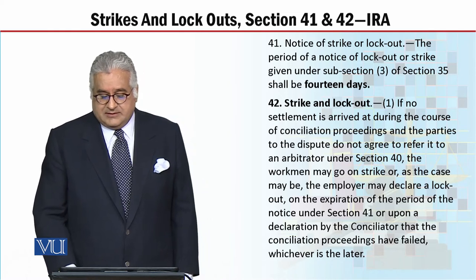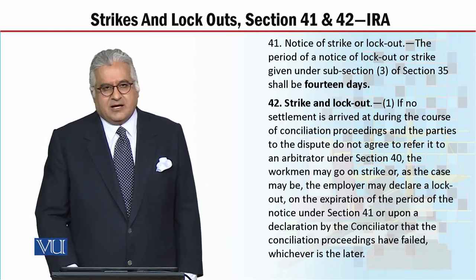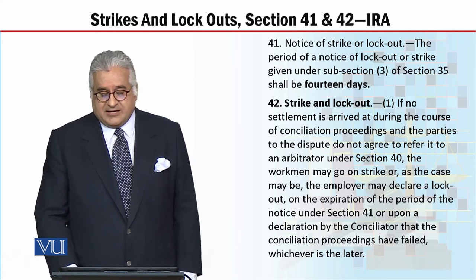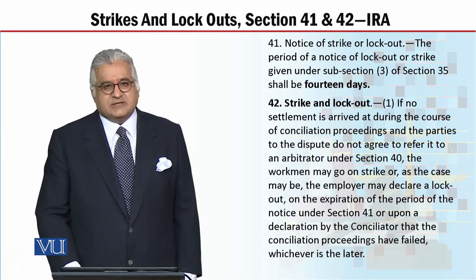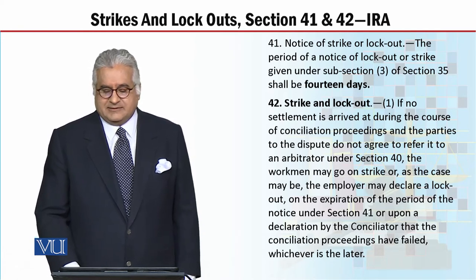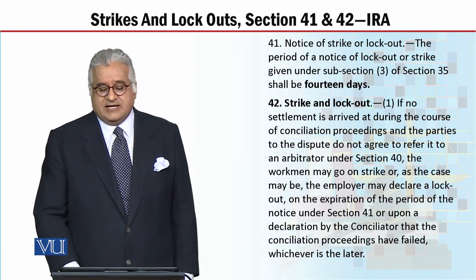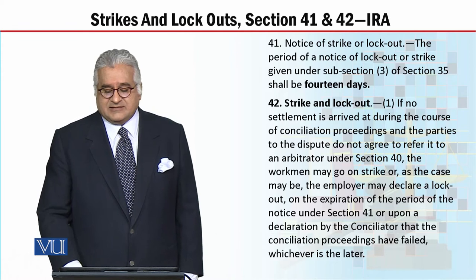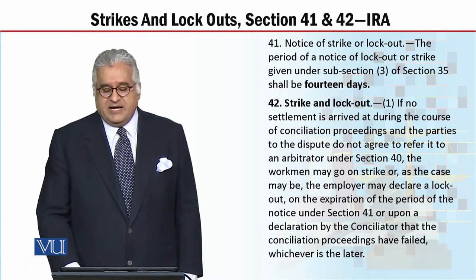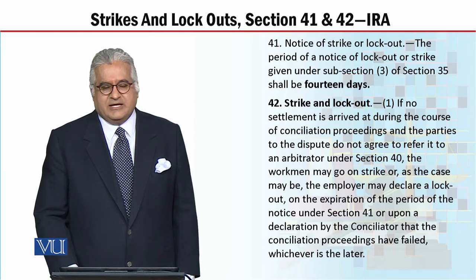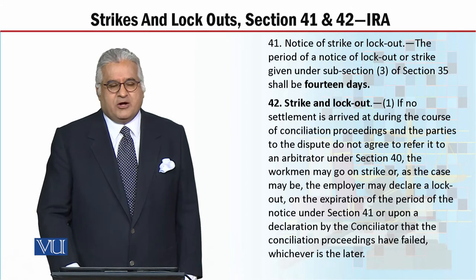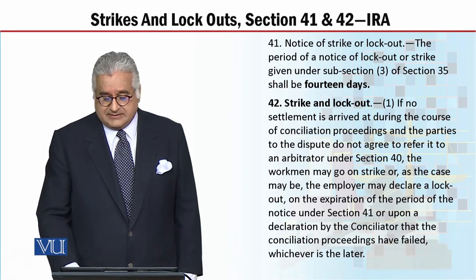The workman may go on strike. Reading Section 42 again: if no settlement is arrived at during the course of conciliation proceedings and the parties to the dispute do not agree to refer it to an arbitrator under Section 40, the workman may go on strike. This means if conciliation fails and arbitration fails, the workers can go on strike and the employers can proceed to lockout.